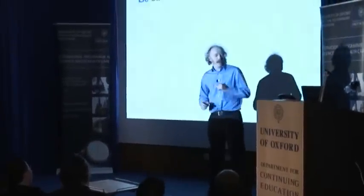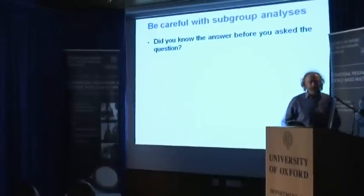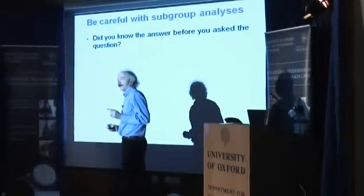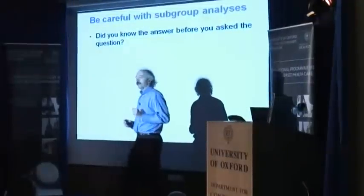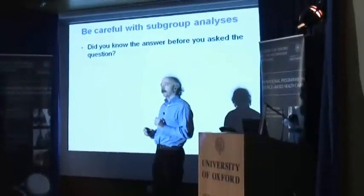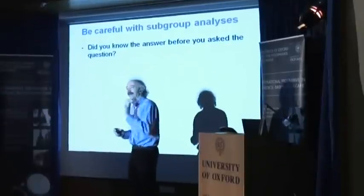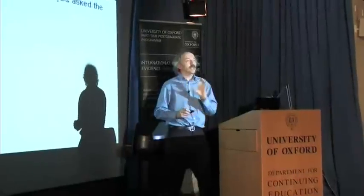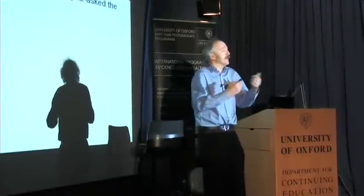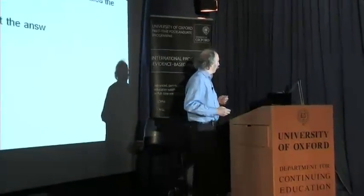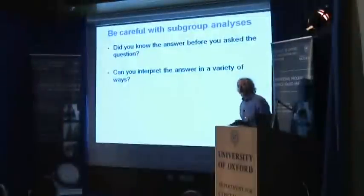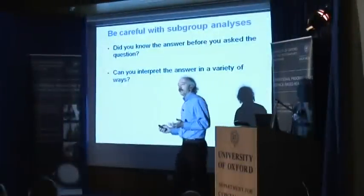So what does all that mean? It means being careful with our subgroup analyses. It means: did you know the answer before you asked the question? Did I know what was written on the other side of that envelope? Or did it just work by asking the question often enough that you get the answer you want and say 'that's the way I'm going to analyze it — that's what I'm going to reveal now'? Can you interpret the answer in a variety of ways?